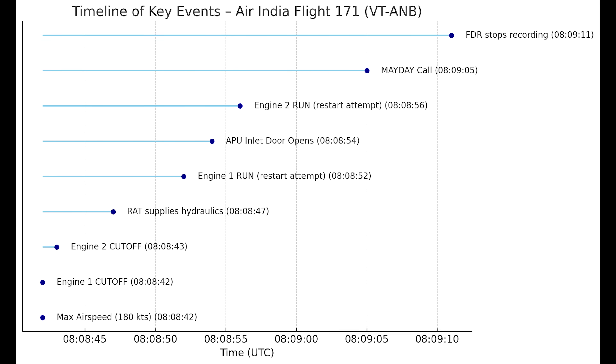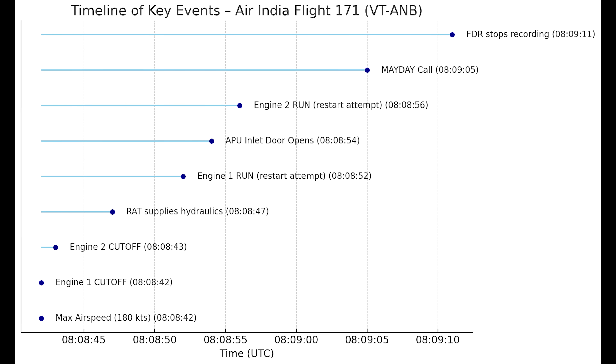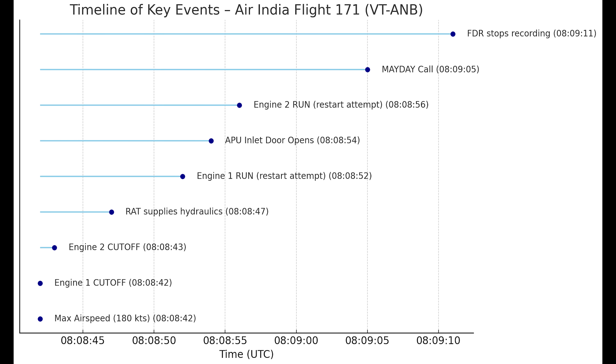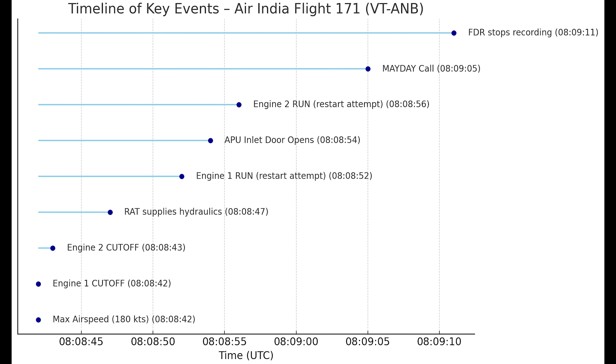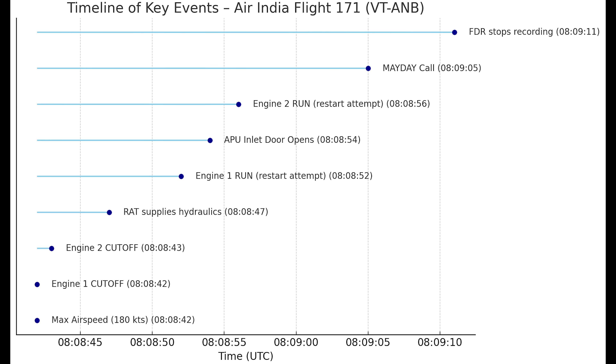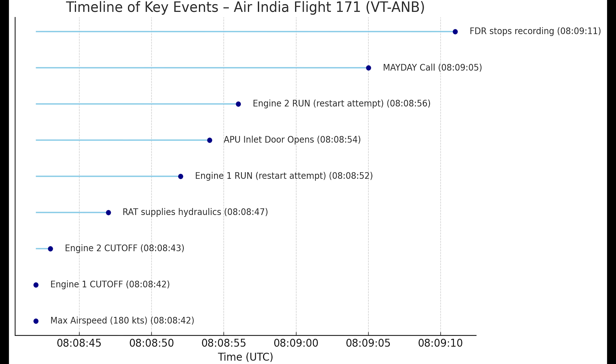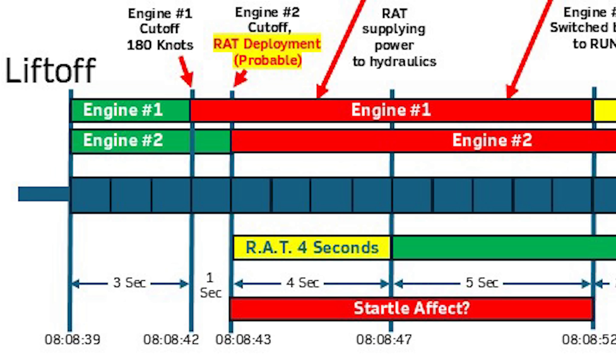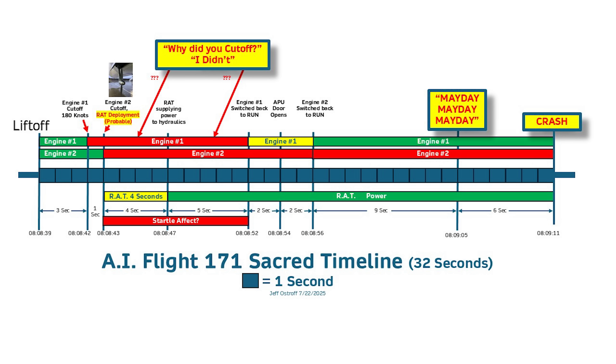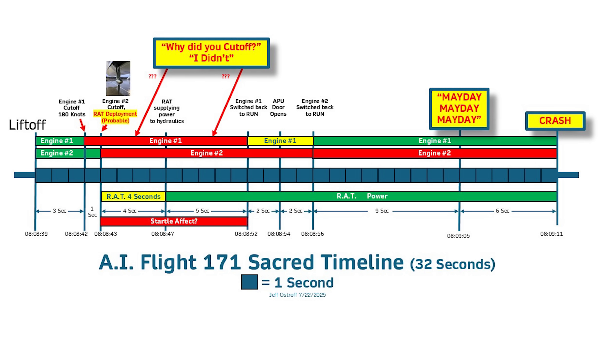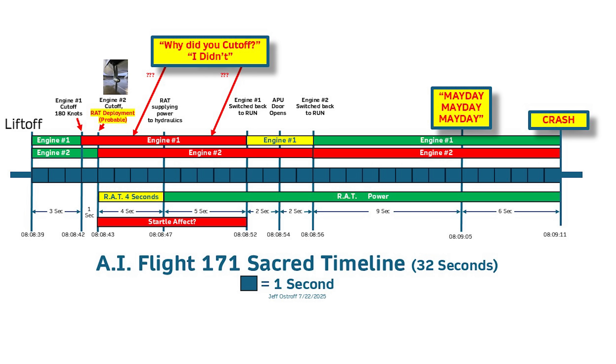I made this additional simplified chart — a timeline of key events — that gives an at-a-glance view of the milestone moments of this 32-second flight without distraction. I've planted the new flag: RAT deployment occurred at four seconds in, at 08:08:43. I hope the new sacred timeline slide is useful for seeing the whole 32 seconds, all the milestones and timestamps, and how everything relates to each other — it's a lot easier to read now.